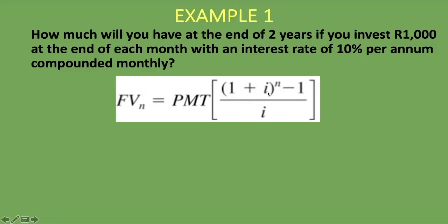Remember, we like to put our i in decimal form. For 10%, that's 0.10, which you get by dividing 10 by 100. But since it's compounded monthly — 12 times per year — we divide 0.10 by 12. And our N is not just the number of years; we multiply two years by 12, giving us N = 24, because it's compounded monthly. Students always make the error of not dividing the interest rate by 12.